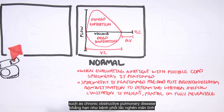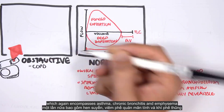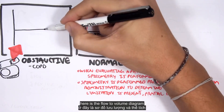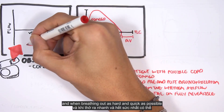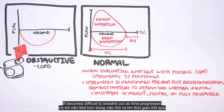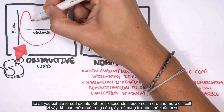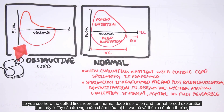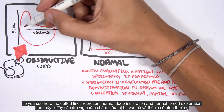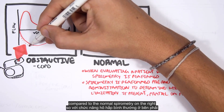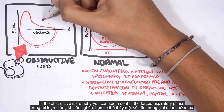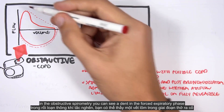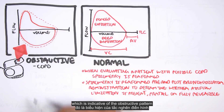Such as chronic obstructive pulmonary disease, which encompasses asthma, chronic bronchitis, and emphysema. Here is the flow-to-volume diagram. Patients do lose some inspiratory volume when taking a deep breath in, and when breathing out as hard and quick as possible it becomes difficult as time progresses. You see the dotted lines represent normal deep inspiration and normal forced expiration. In the obstructive spirometry you can see a dent in the forced expiratory phase, which is indicative of the obstructive pattern.